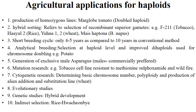Next is mutation research — for example in tobacco, cell lines resistant to methionine sulfoximide and wildfire. Cytogenetic research: to determine the basic chromosome number, polyploidy and production of alien addition and substitution lines in wheat. Evolutionary studies: to identify the exact ploidy level and genetic constitution of plants. Then genetic studies like for hybrid development and indirect selection, like in rice — example is Yachiao by.